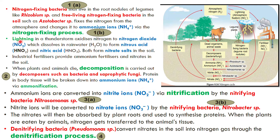The second mode is a natural phenomenon — lightning. During a thunderstorm, lightning oxidizes nitrogen in the air to become nitrogen dioxide (NO2), which then dissolves in rainwater (H2O). This produces nitrous acid (HNO2) and nitric acid (HNO3), and both form nitrate salts in the soil.